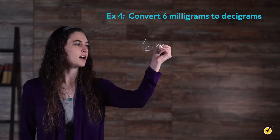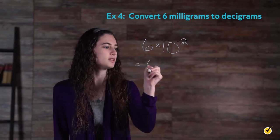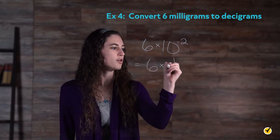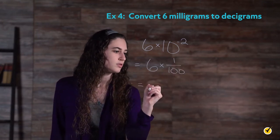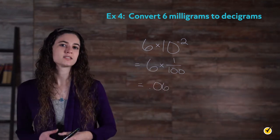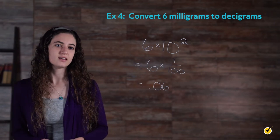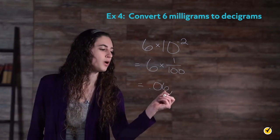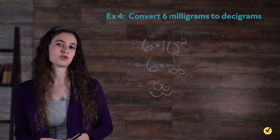6 times 10 to the negative 2 power is equal to 6 times 1 over 100, which is equal to 0.06. There are 0.06 decigrams in 6 milligrams. As you can see, the decimal point was moved one, two places to the left to get to the smaller quantity.